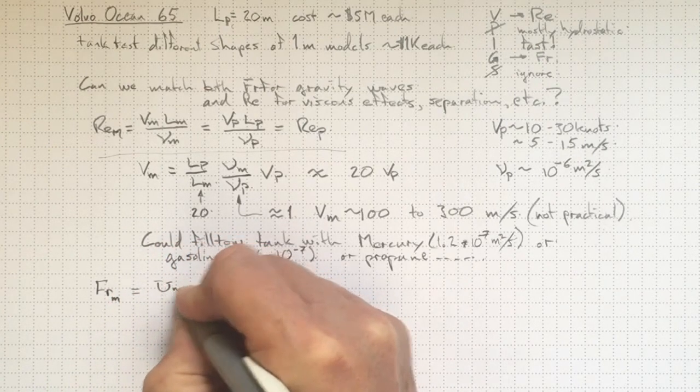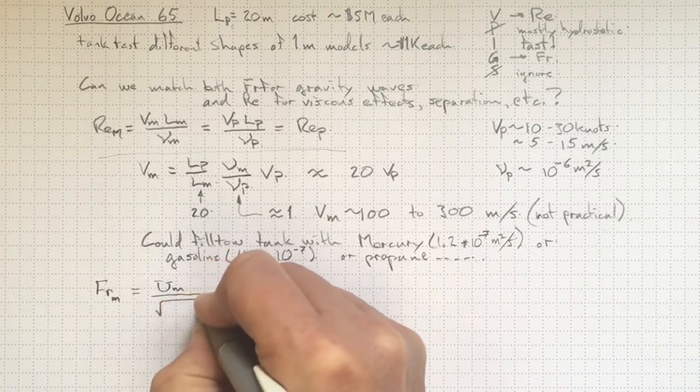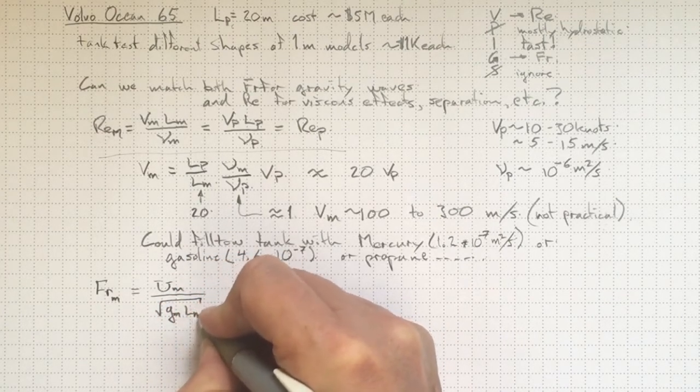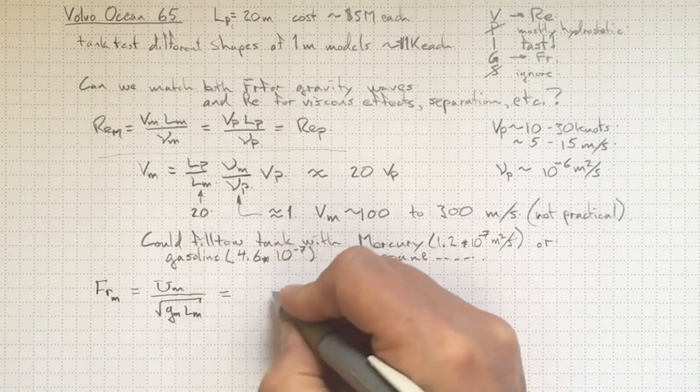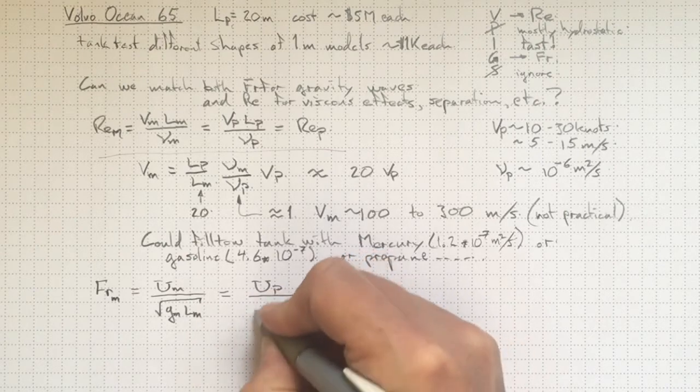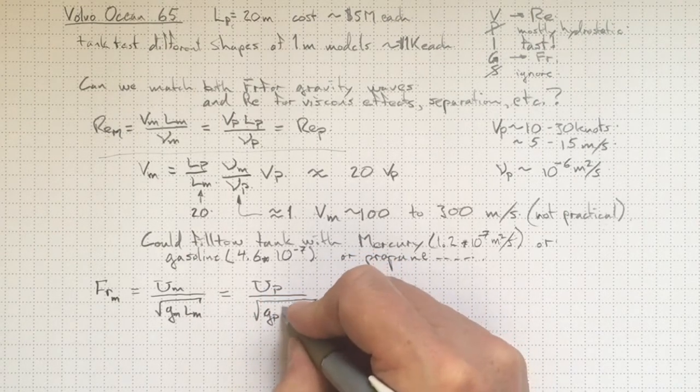So the Froude number for the model will be equal to the velocity for the model divided by the square root of gravity for the model and the length of the model. And that should be equal to the same thing for the prototype, the velocity of the prototype divided by the square root of gravity for the prototype and length for the prototype.